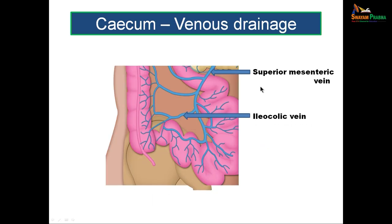The veins follow the arteries: anterior and posterior cecal veins drain into the ileocolic vein, which drains into the superior mesenteric vein, which is a formative tributary of the portal vein. Thus the cecum drains into the portal venous system.